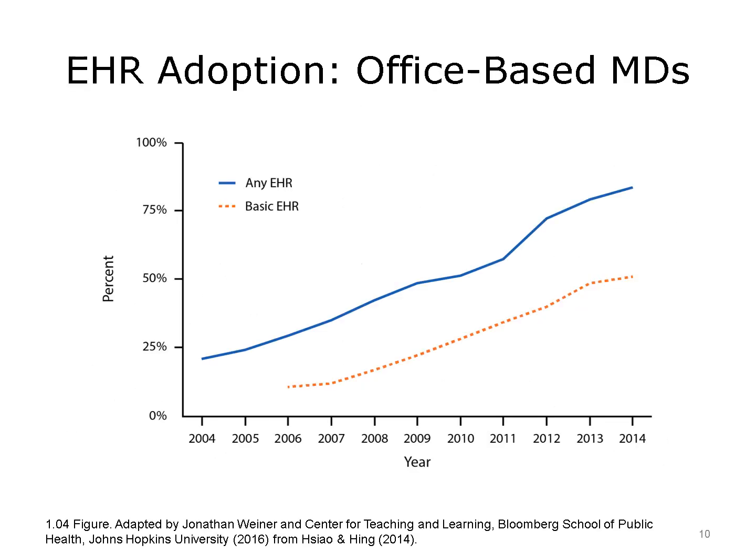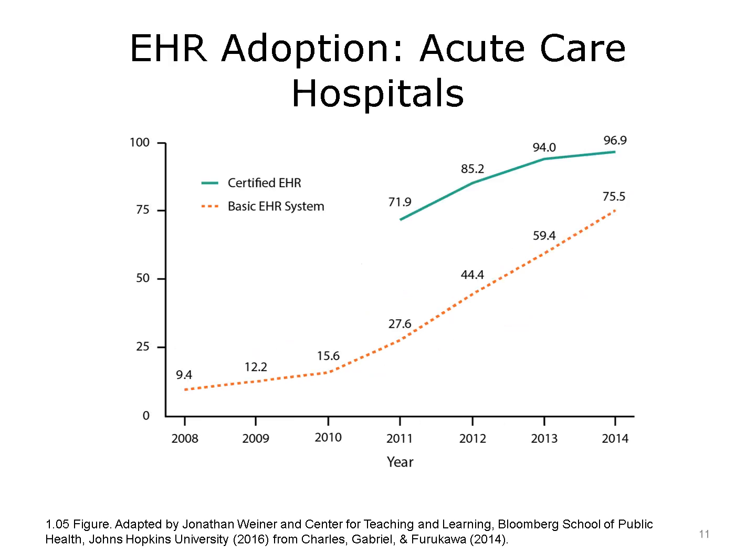Shown here is the growth rate of electronic health record adoption by office-based medical doctors, in terms of both basic and comprehensive EHRs. Comprehensive includes not just the charting function, but also clinical decision support, computerized provider order entry such as e-prescribing, and some interoperability across providers in the community. The basic would include mainly medical charting. A similar growth rate for acute care hospitals is also shown. These figures represent statistics up to 2014, but you can assume that pretty much 100% of U.S. hospitals and probably 90% of U.S. office-based medical doctors now have electronic health records.